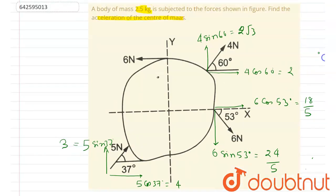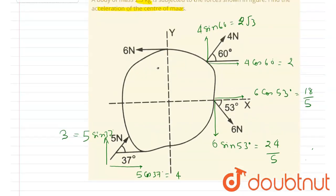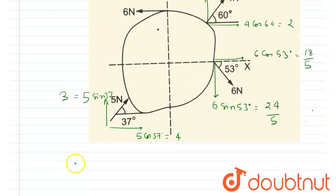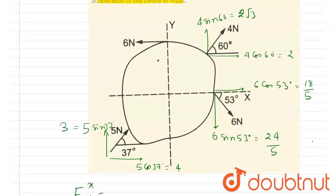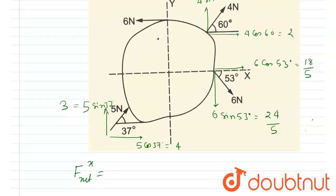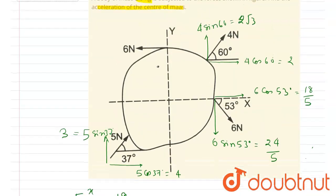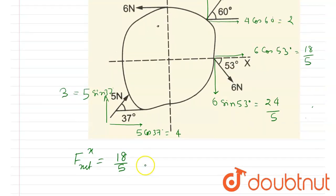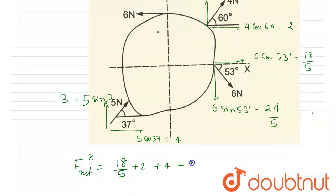Okay, so now if you see the question, we want the acceleration of the center of mass, right? Okay, so we can calculate the net force in horizontal direction. So if I write the F net in x, that will be equal to 18 by 5, and it will be 2 plus 4 minus 6, right? So this will be 18 by 5.